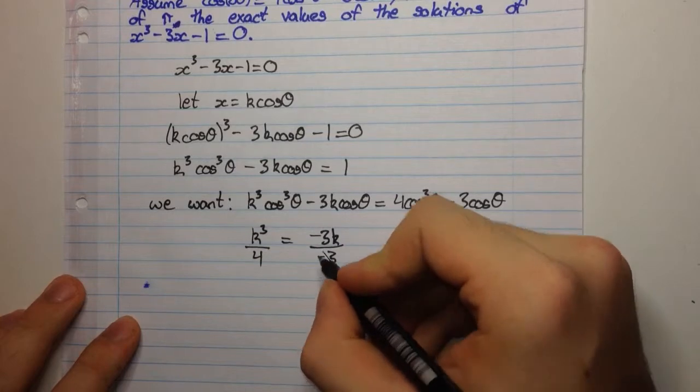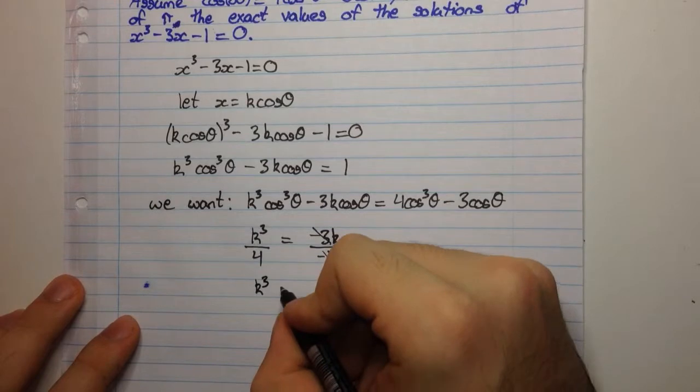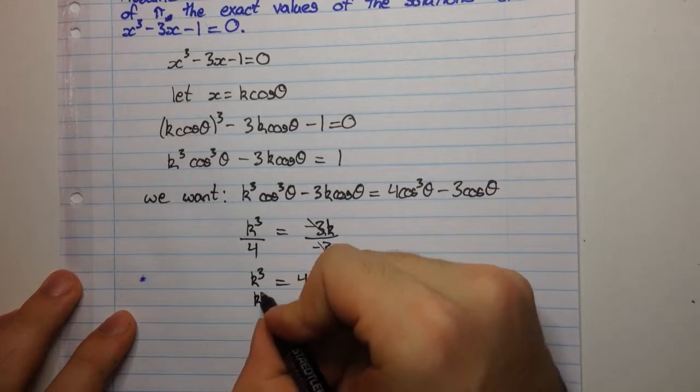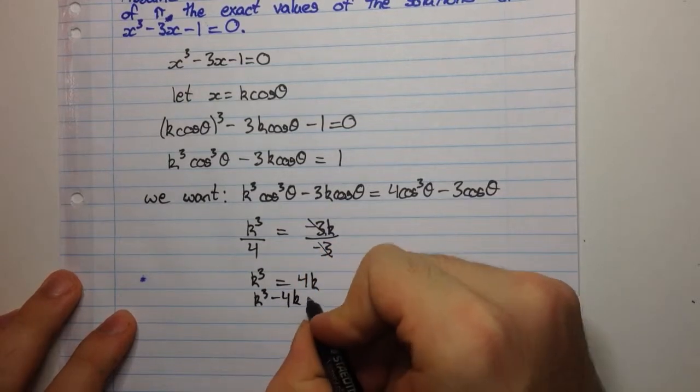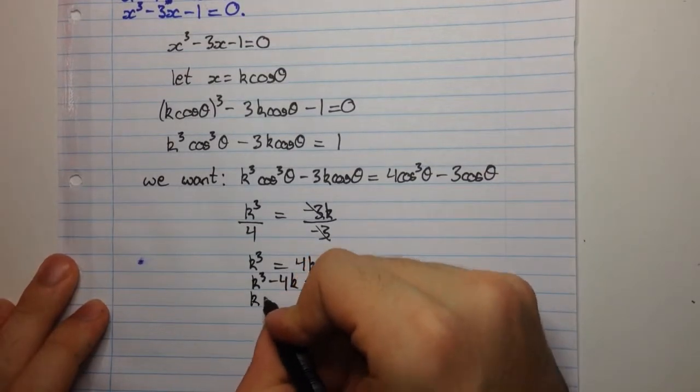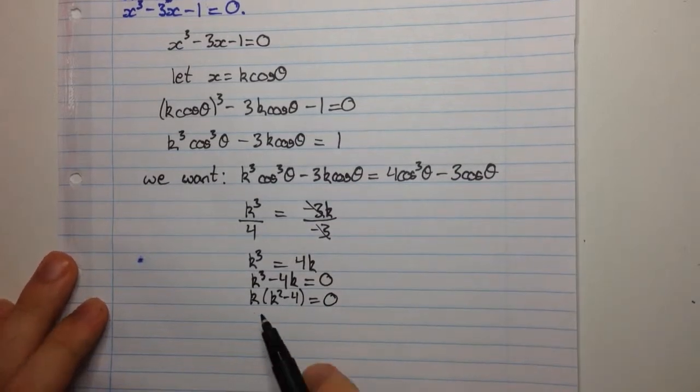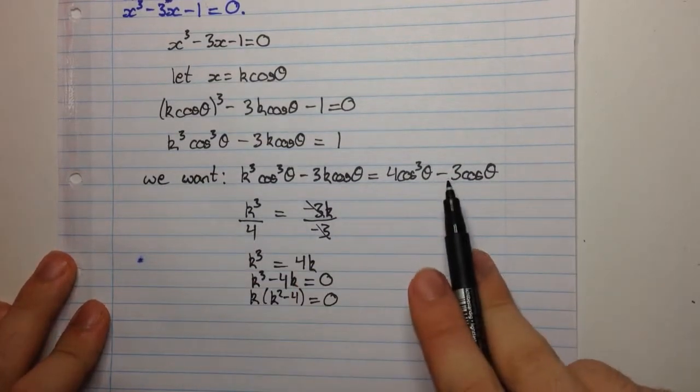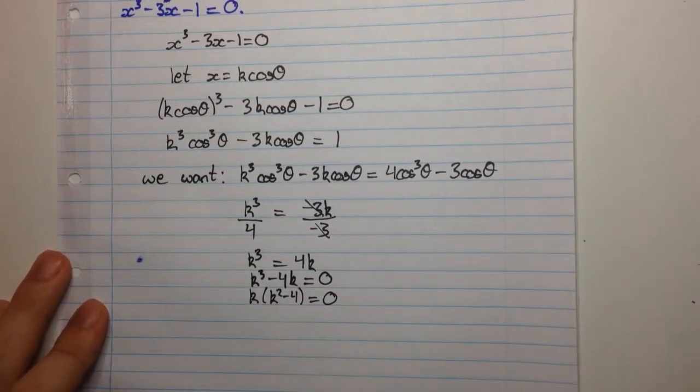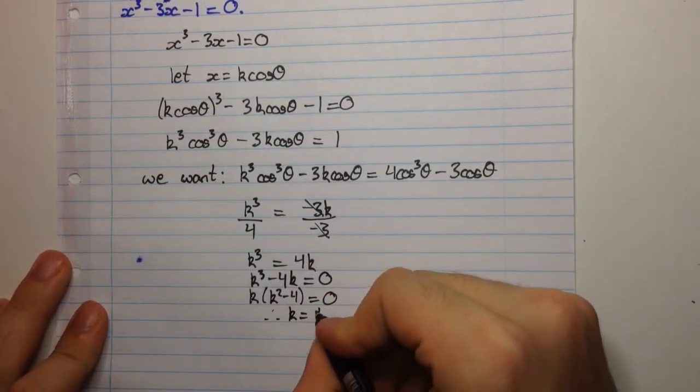Now these minus 3s will cancel and we'll be left with k³ equals 4k. So we're going to have k³ minus 4k equals 0. And when we solve this, we can get k into k² minus 4 is equal to 0. Now clearly having k equal to 0, that's not going to help us out here. So we're just going to consider k² minus 4 is equal to 0. So we can say therefore, k is equal to plus or minus 2.